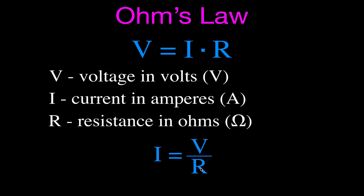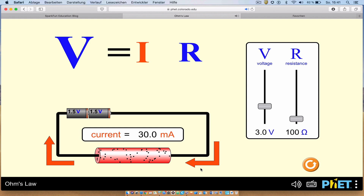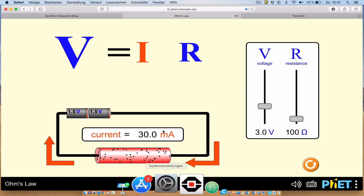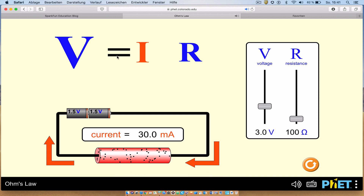If you're teaching or learning, they have excellent simulations for math and science. Check out their website. Now here is the simulation. This is from PHET simulations. We have that the voltage is equal to the current times the resistance — that's Ohm's Law. We have a simple circuit down here. We have batteries for our voltage. We have a reading for the current — it's currently 30 milliamps. This is our resistor, and these arrows are showing the direction of the current.